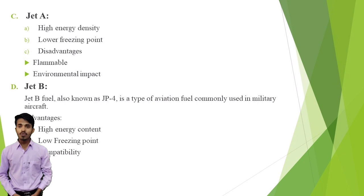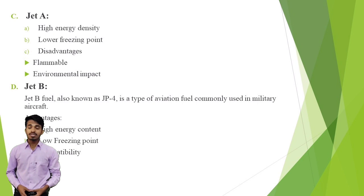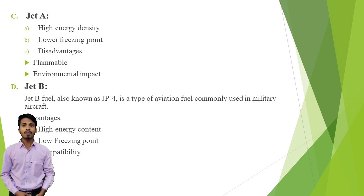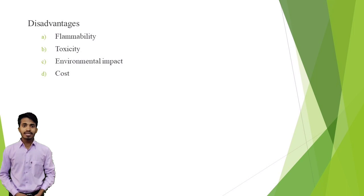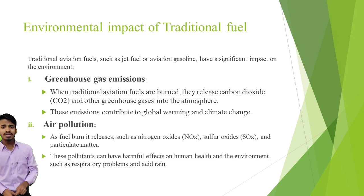Now we discuss about Jet B. Jet B fuel is a type of aviation fuel commonly used in military aircraft. It has several advantages including high energy content, low freezing point, and compatibility. It also has several disadvantages including flammability, toxicity, environmental impacts, and cost.